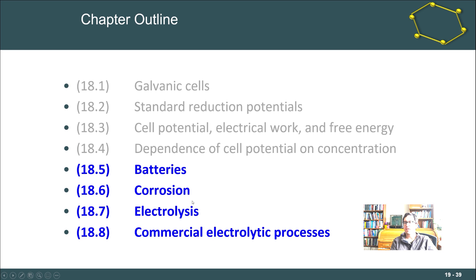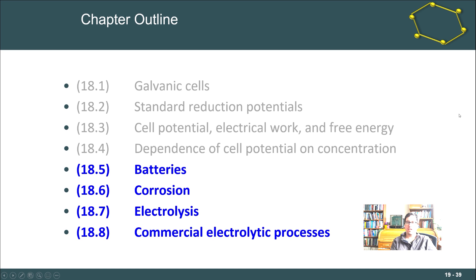In the next section we'll look at common applications: electrolysis — driving redox reactions forward using electricity to, for example, plate out copper metal — as well as batteries and corrosion. Corrosion is the subject of a huge body of literature because it costs industry billions of dollars annually. Thanks for tuning in, and I'll see you in the next lecture.